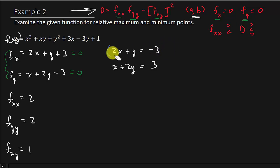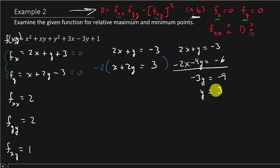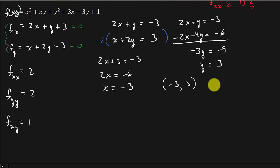I'm going to multiply the second equation by negative 2 to eliminate the x terms. That gives 2x plus y equals negative 3, and negative 2x minus 4y equals negative 6. Adding those gives negative 3y equals negative 9, so y equals 3. Then plugging back in: 2x plus 3 equals negative 3, so 2x equals negative 6, giving x equals negative 3. So our critical point AB is negative 3, 3.